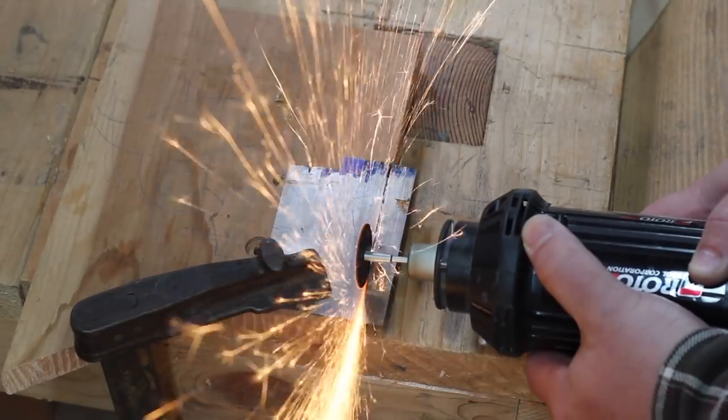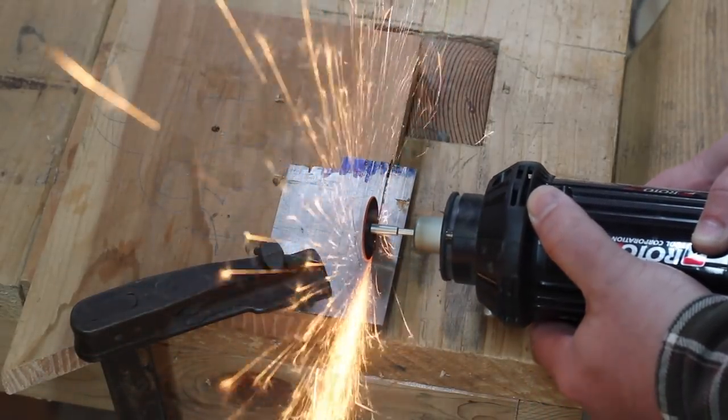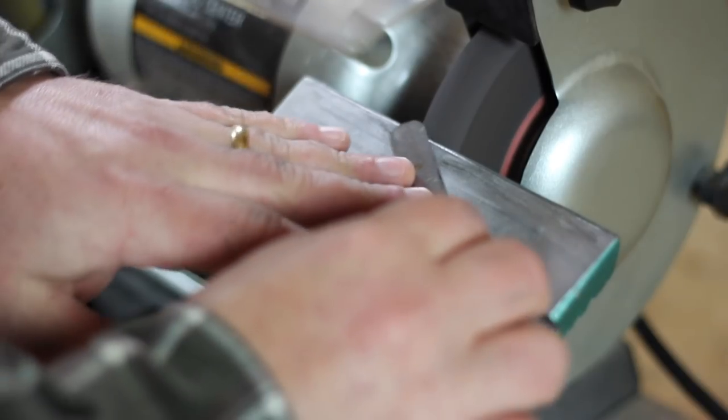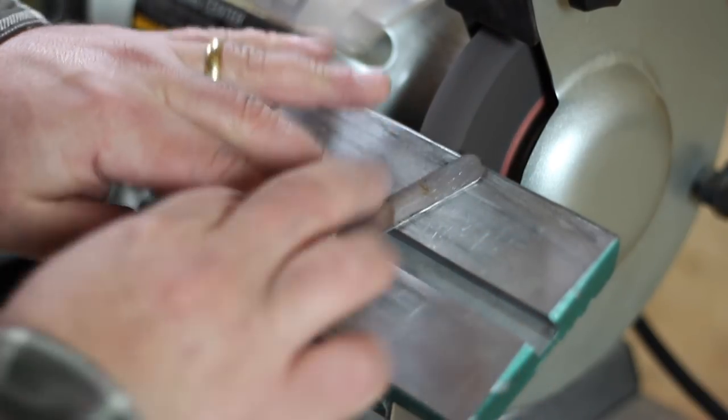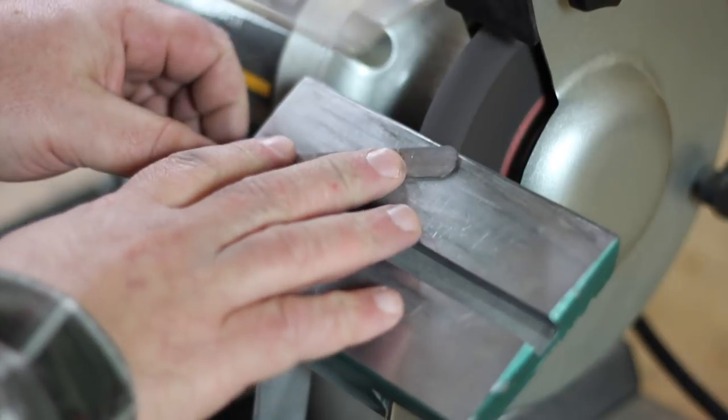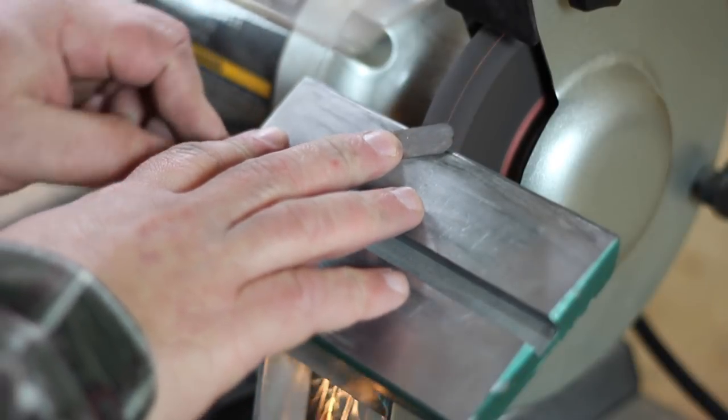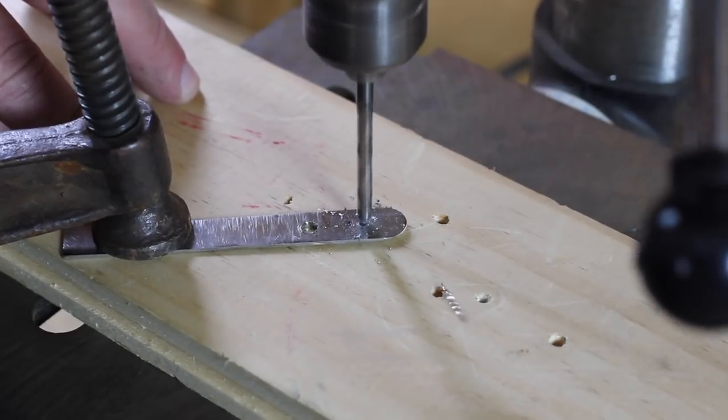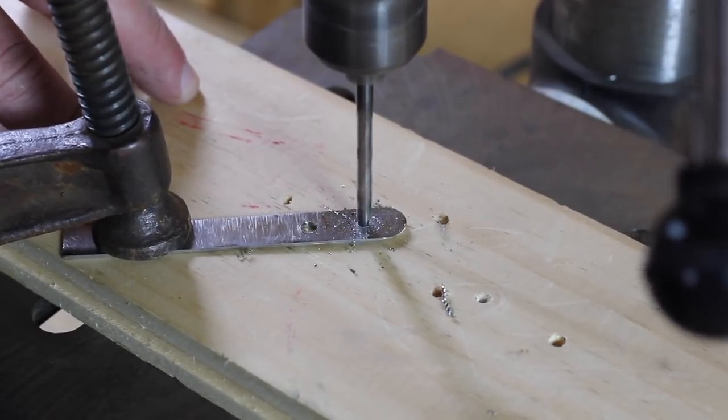To make the blade, cut a piece of steel from an old hand saw or card scraper. File the cut edge smooth and then grind a curved bevel on one end. Drill a series of holes down the center of the blade and connect the holes to create a slot using a chainsaw file.